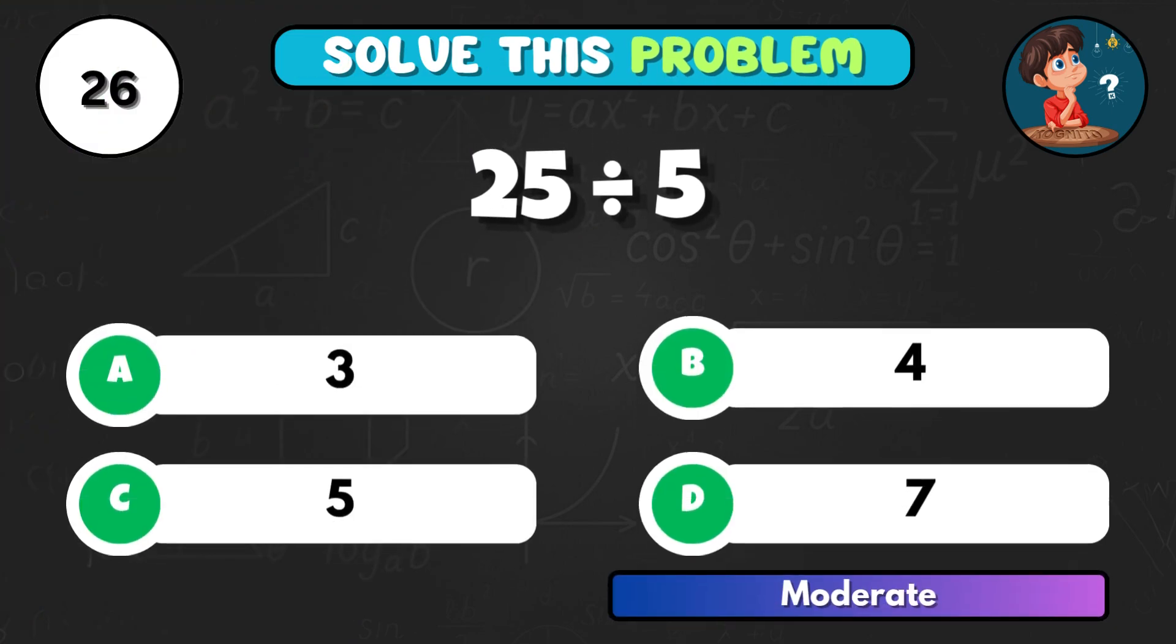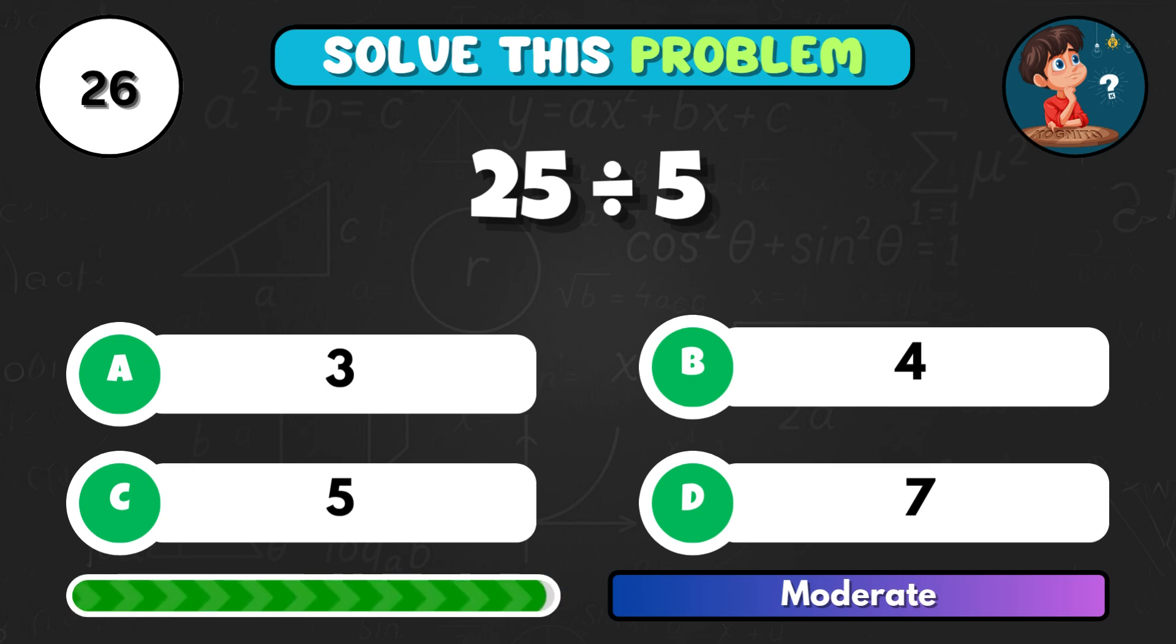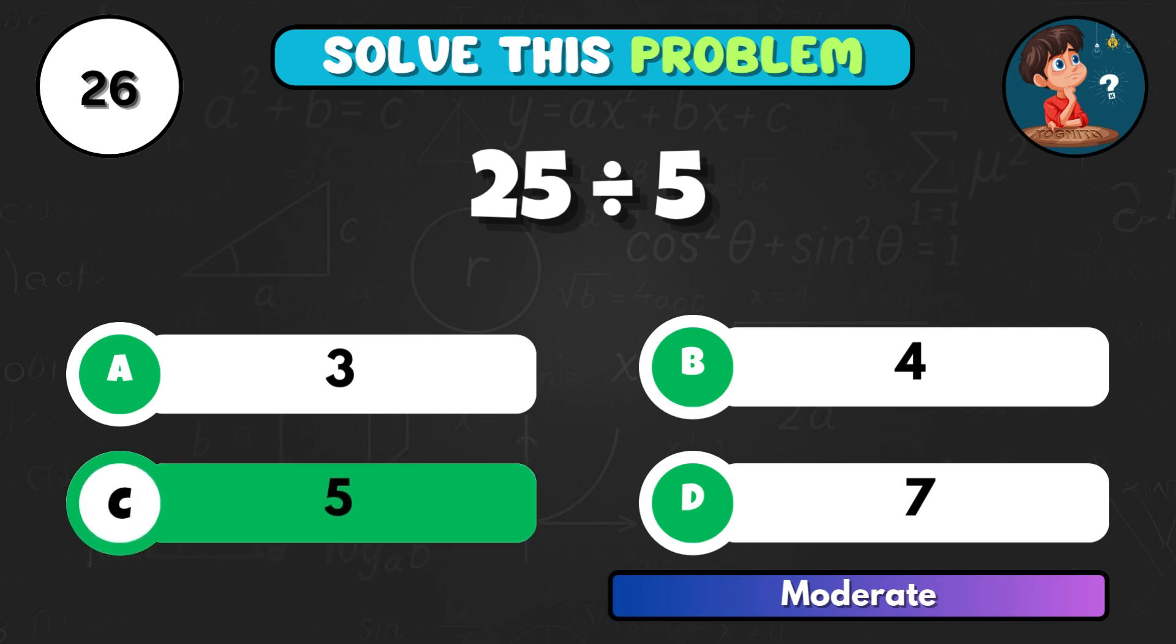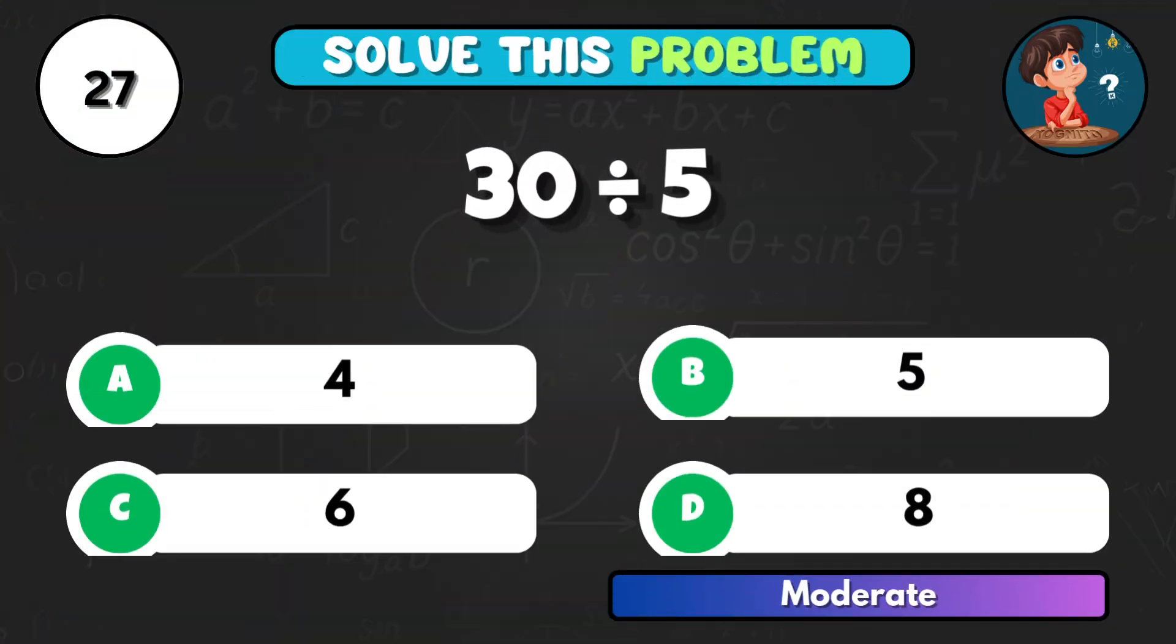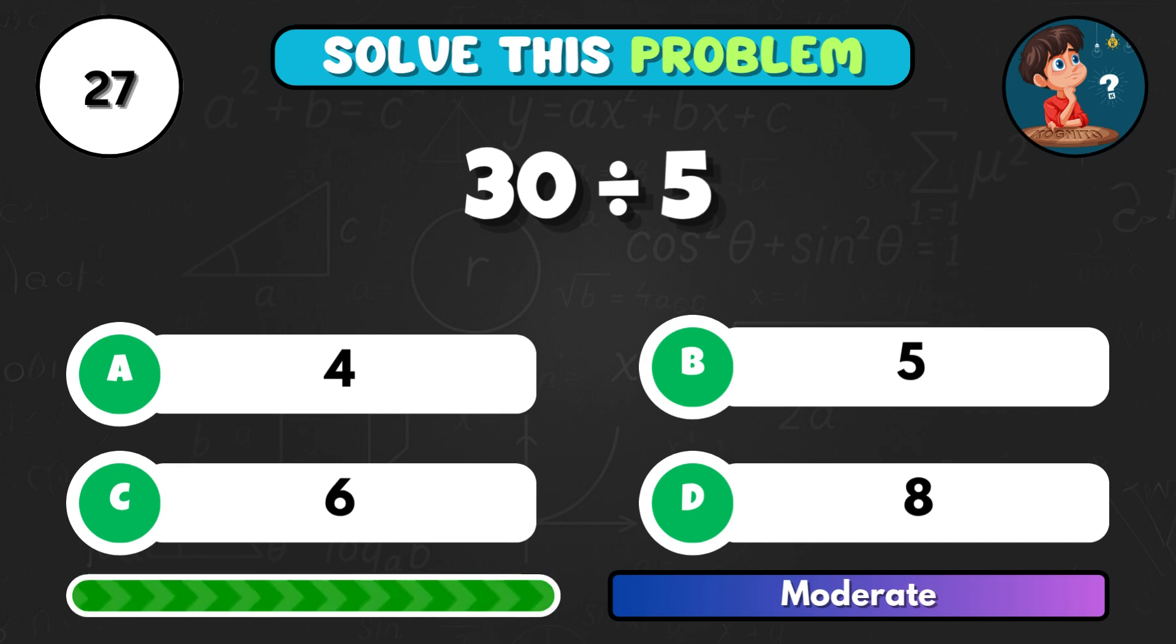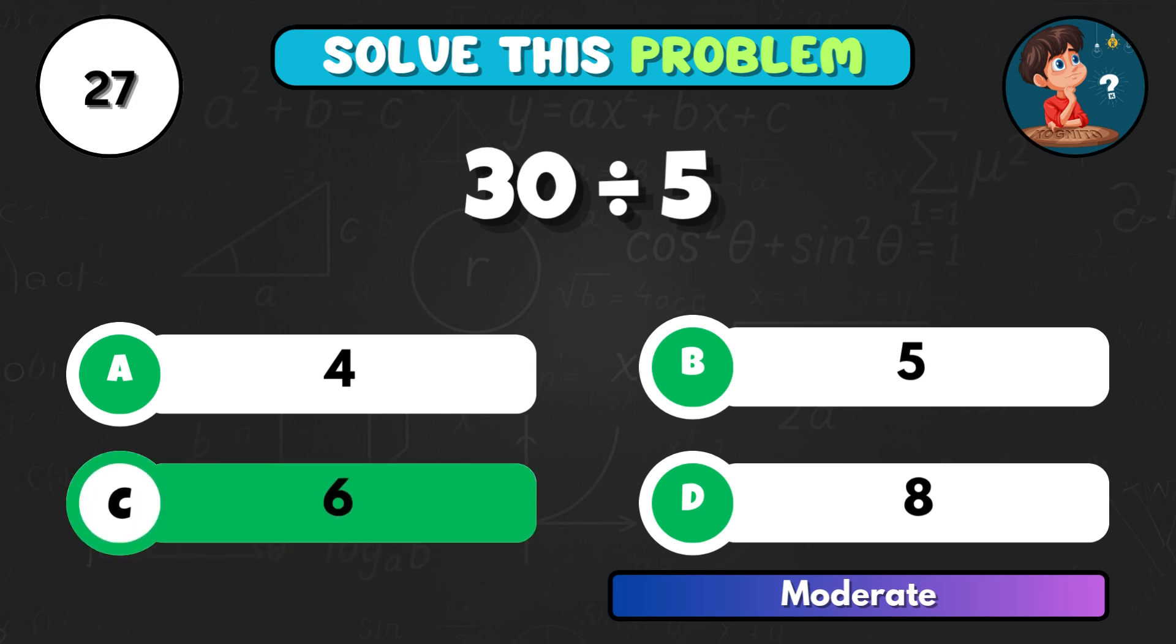Here's a quick one. 25 divided by 5. Correct letter C equals 5. 30 divided by 5, what's that? Option C, giving 6.